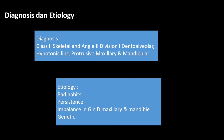From that analysis, the diagnosis was class 2 skeletal occlusion and class 2 Angle division 1. The etiologies of the maxillary occlusion were bad habits, persistence of primitive teeth, imbalance in growth and development of the maxillary and mandible, and also genetic factors.